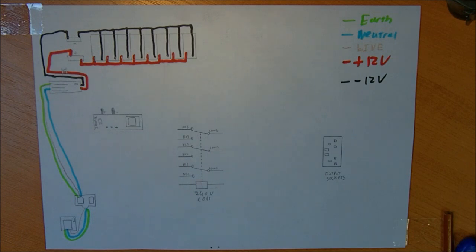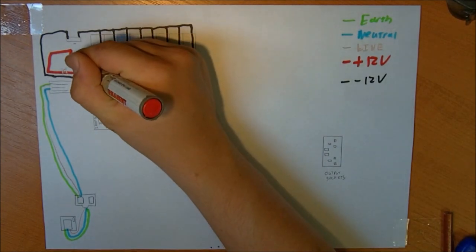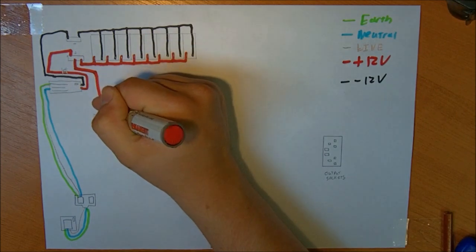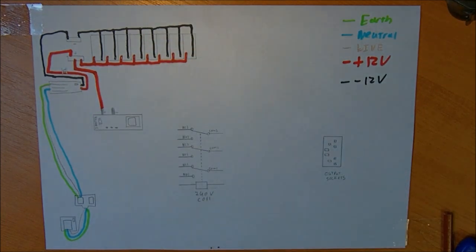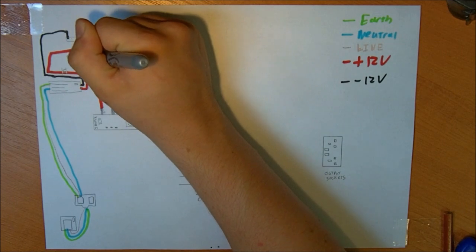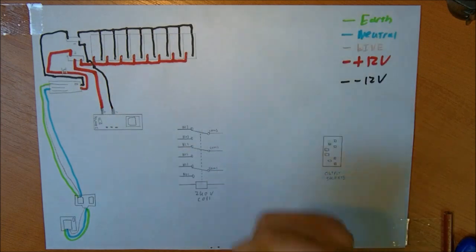Next step is to power our inverter. This is probably the simplest step. Positive from the earth block goes to the positive input on the inverter. Negative from the earth block goes to the negative on our inverter. Okay. Right.